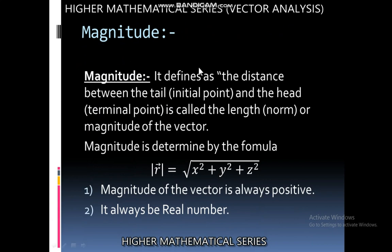First is magnitude. Magnitude is defined as the distance between the tail or initial point and the head or terminal point, called the length, norm or magnitude of the vector. The magnitude of the vector is determined by the formula |r| = √(x² + y² + z²). The magnitude of the vector is always positive and a real value.